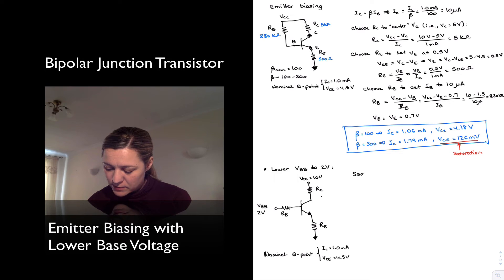Same analysis as before for Rc and the Re. But my Rb calculation changes now. The new value of Rb is now being given by, instead of being Vcc minus Vb, it's now Vbb minus Vb divided by IB.